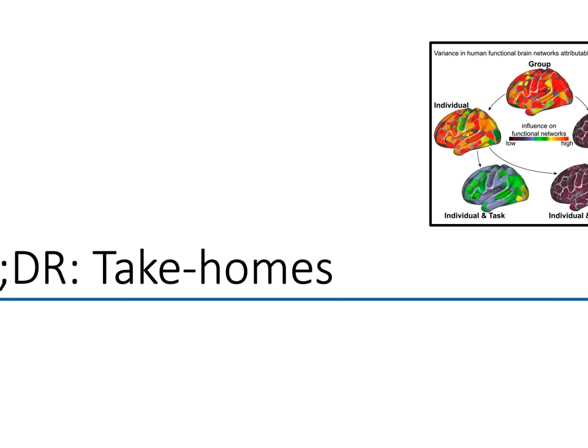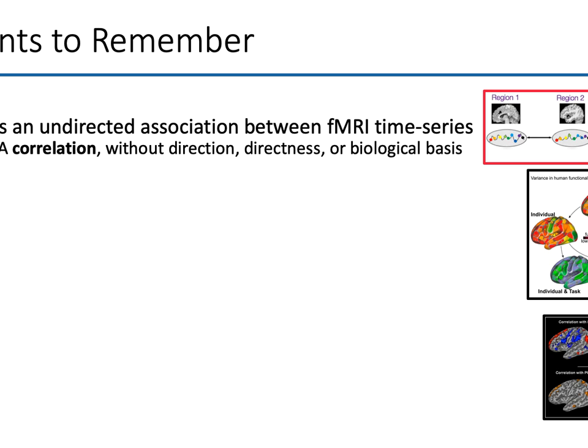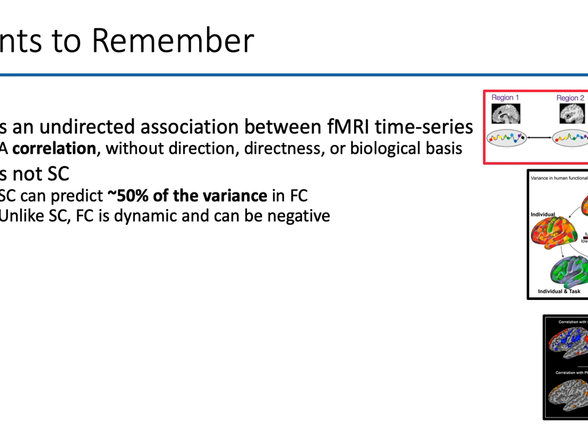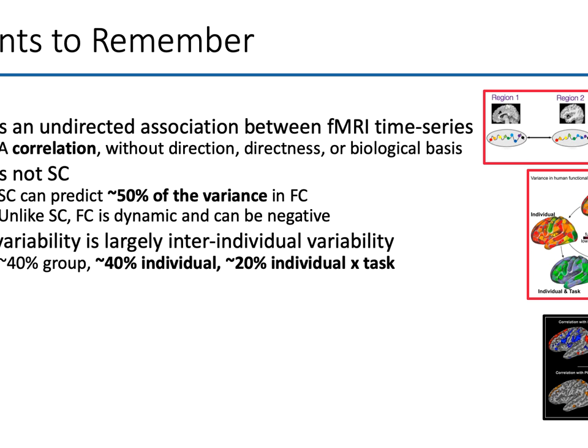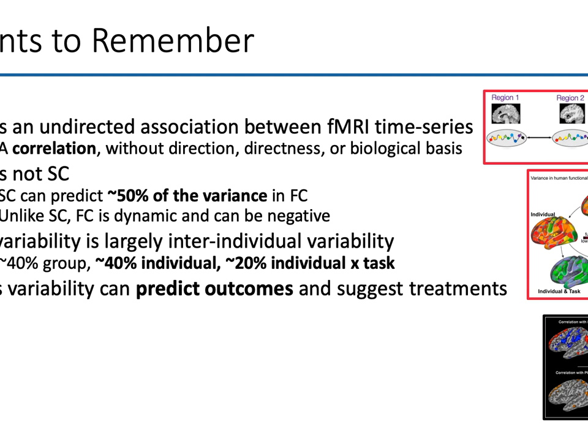We've made it to the end. Remember that functional connectivity is an undirected association between fMRI time series — it's a correlation. It doesn't give you causality, direction, or a direct biological basis. Functional connectivity is not structural connectivity, although structural connectivity can predict about 50% of the variance. But functional connectivity is dynamic and it can be negative. FC variability is largely due to inter-individual variability: about 40% is based on the individual and about 20% is individual-by-task interaction. That makes it very appealing as a potential biomarker.